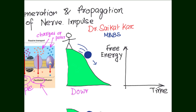Passive transport is also called downhill transport. Like a ball rolling down a hill — moving from higher gravitational potential to lower gravitational potential — molecules in a higher concentrated region have higher chemical potential than molecules in a lower concentrated region, resulting in net movement towards the lower concentrated region by releasing energy.